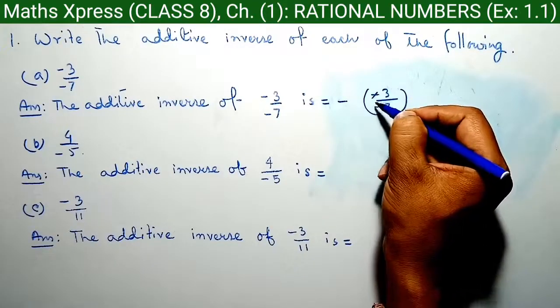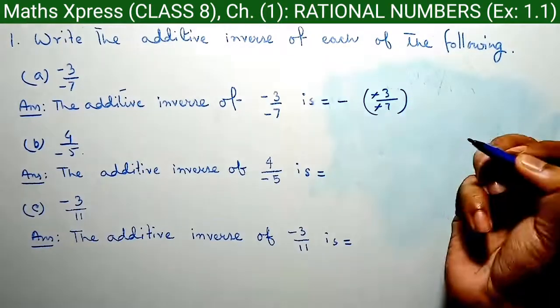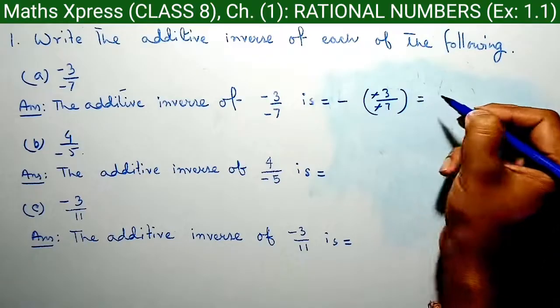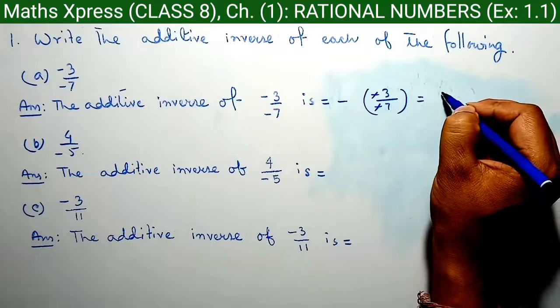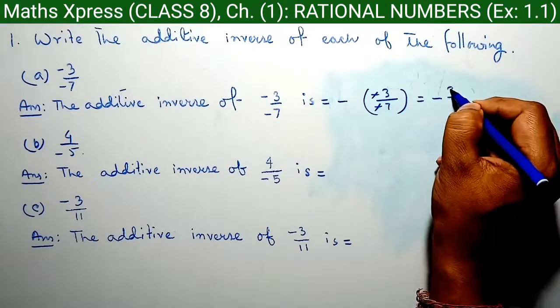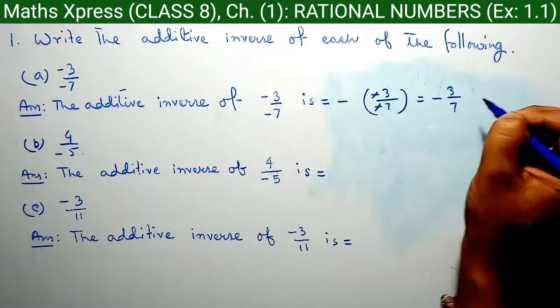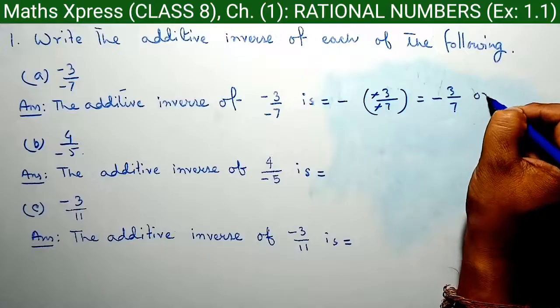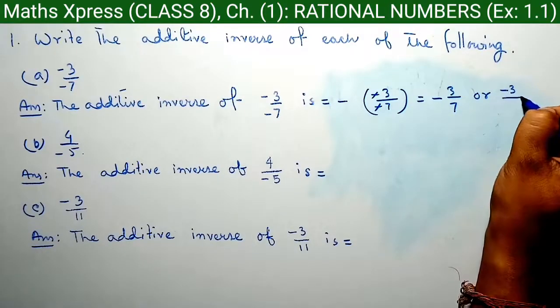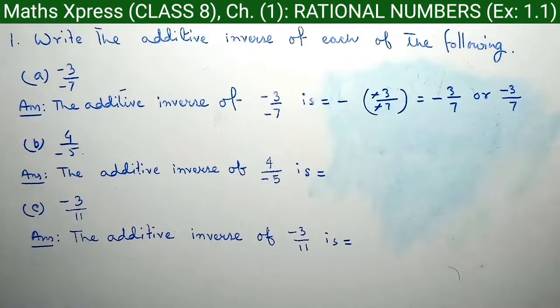Therefore, this minus and this minus here cancel. And finally, the answer is minus 3 by 7.